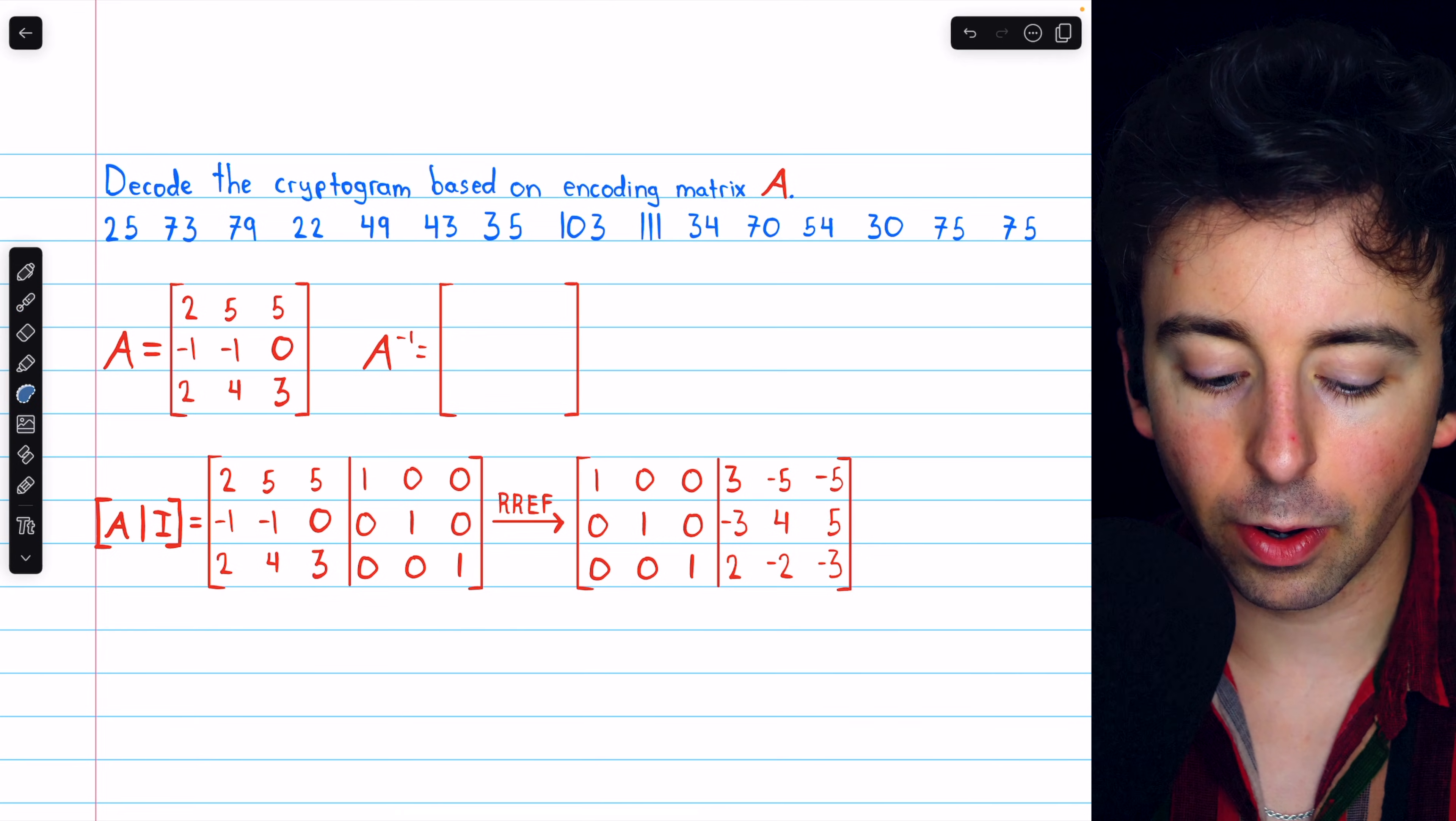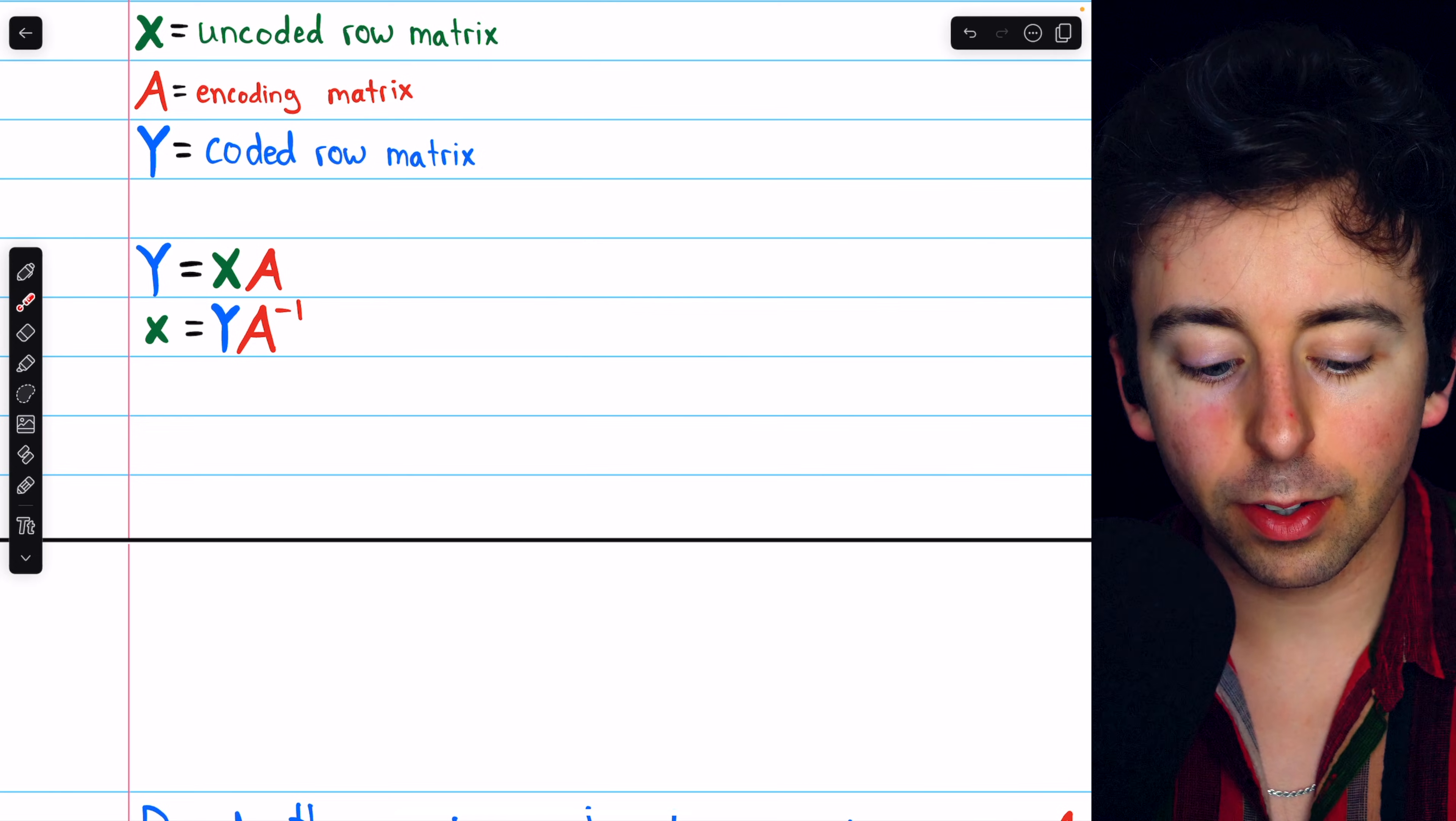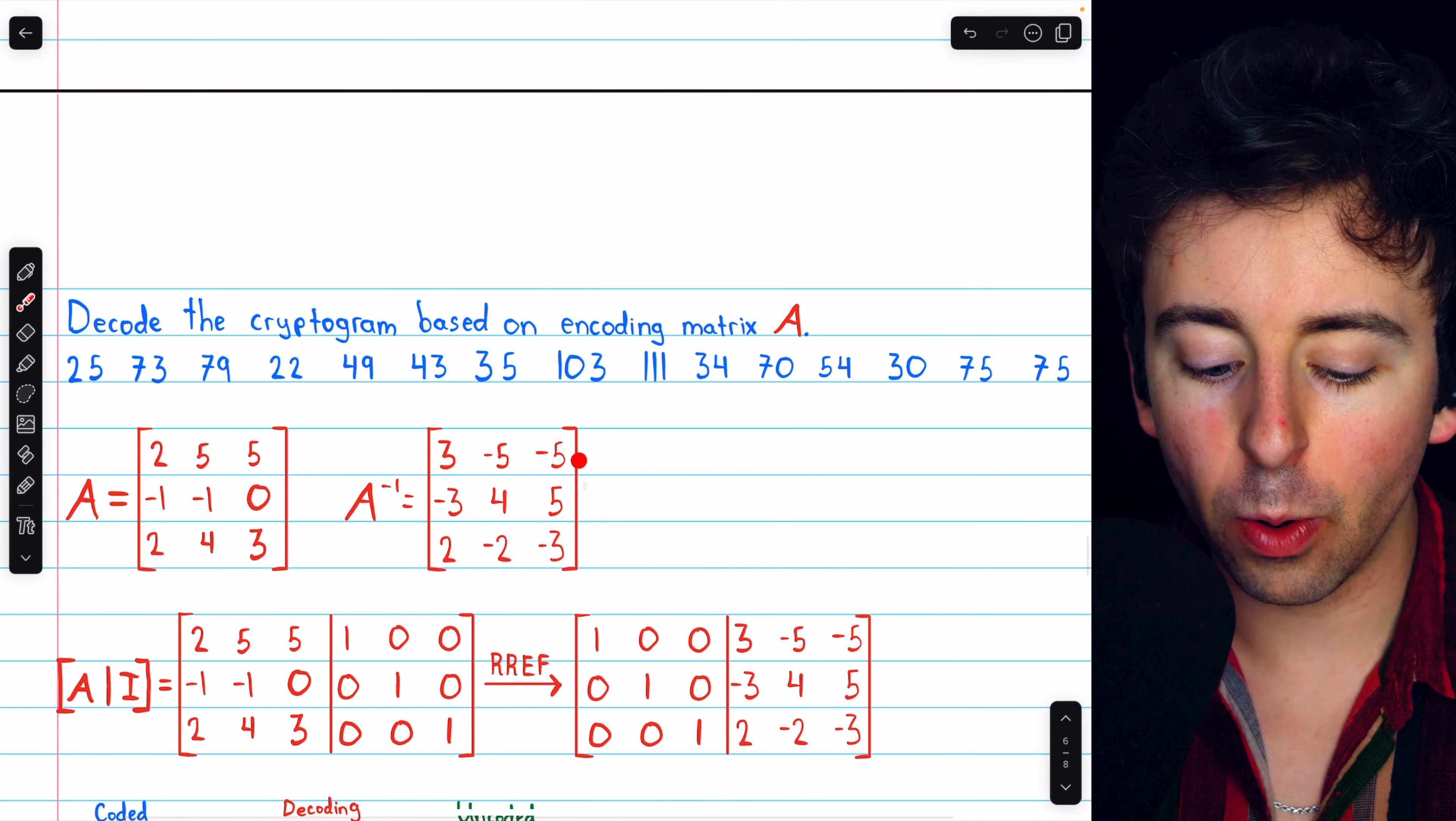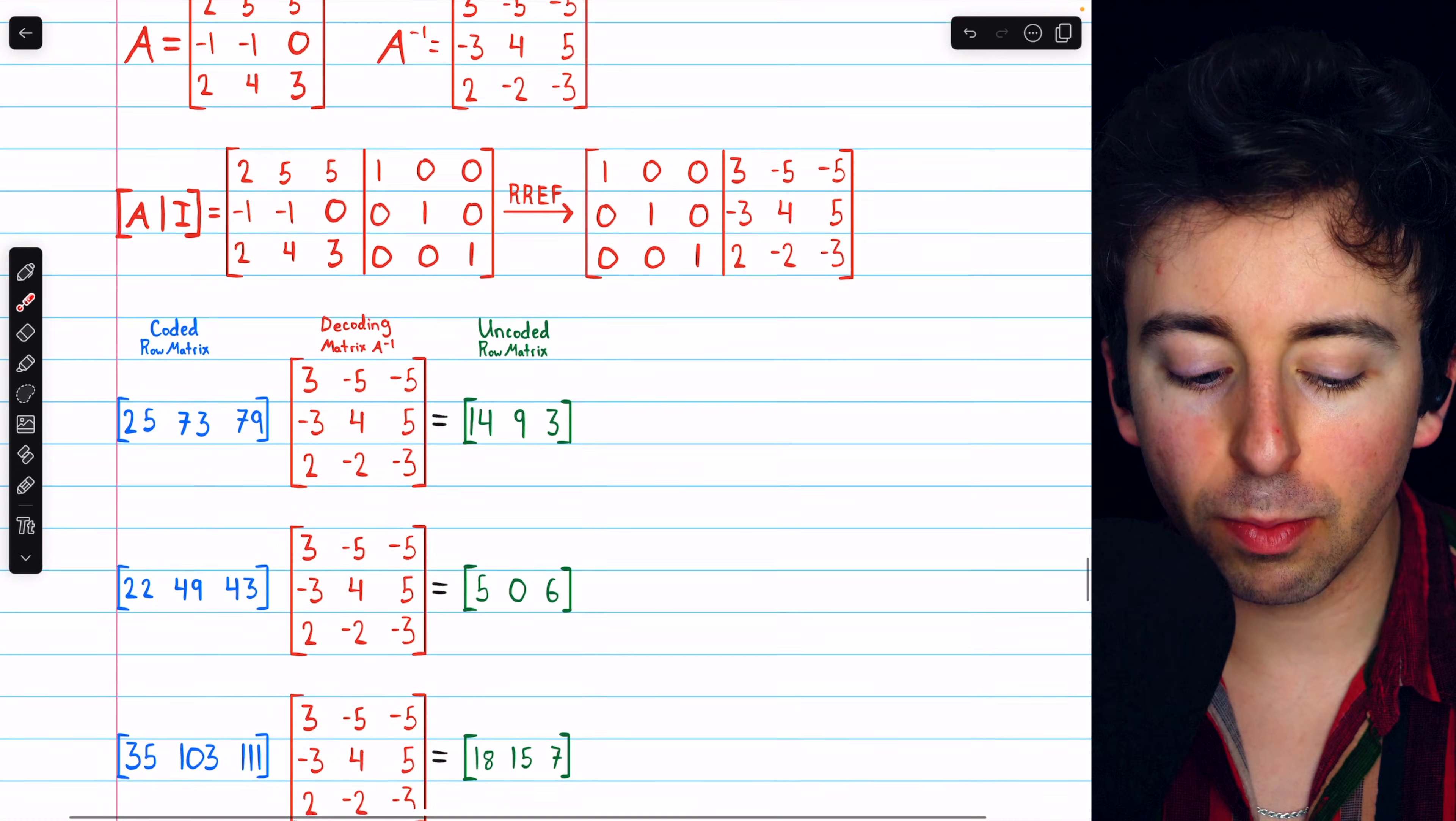So this is A inverse, which we can use to decode the cryptogram. Like we said, once we have A inverse, all we have to do is multiply each coded row on the right by A inverse to get the original uncoded rows. We just found A inverse. That will be our decoding matrix. And so now we just have to do all of that matrix multiplication.